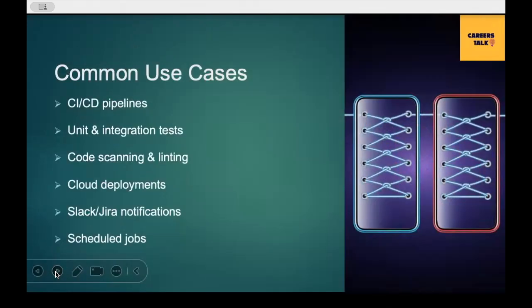Where exactly do teams use GitHub Actions? Common use cases include: running CI/CD pipelines, running unit and integration tests, code scanning and linting, deploying apps to cloud providers like AWS, Azure, and GCP, sending Slack or Jira notifications, and scheduled jobs like nightly builds. These automations save a lot of development time and eliminate repetitive manual steps.